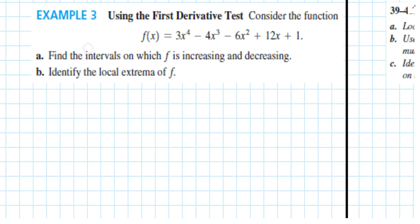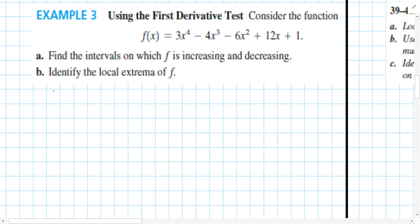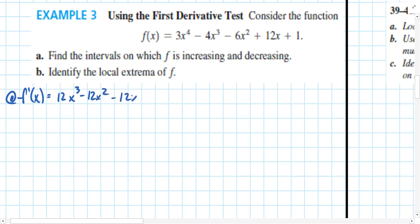When I perform the first derivative test, I'll try to do as much calculus and algebra as I can first, then use a geometric approach following the analysis on a number line. In Part A, we're asked to find the intervals on which the function is increasing and decreasing, then use those intervals to identify the local extrema — meaning maximum and minimum points. To find where the function is increasing and decreasing, we need the derivative. Since we have a polynomial function, the derivative is 12x cubed minus 12x squared minus 12x plus 12.